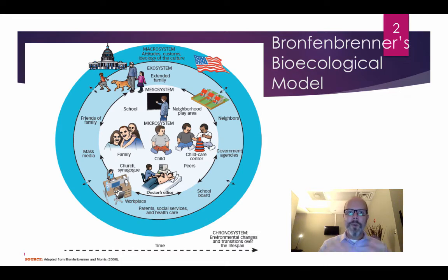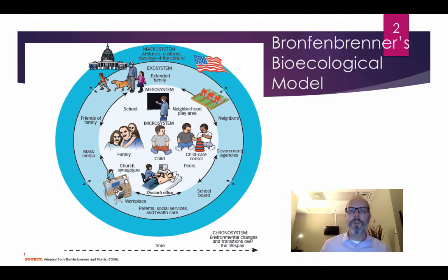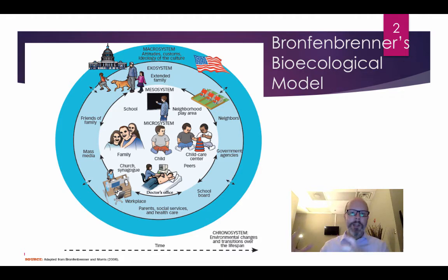As you read in your chapter, Bronfenbrenner talks about different spheres of influence within the ecological model. Here's a pictorial so you can get a sense of what he was really talking about. The microsystem is the most immediate unit — that's the child herself or himself and their primary caregivers, whether it's the family or a child care center.